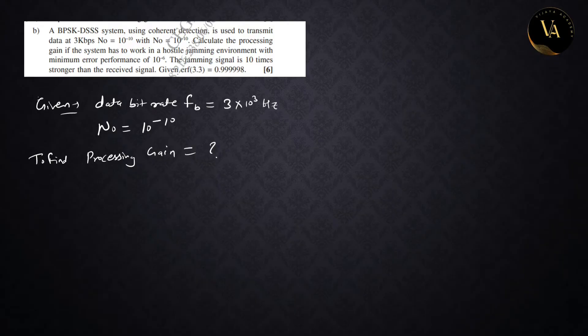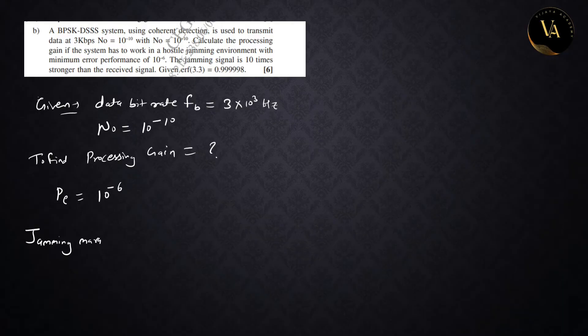What is given here? Probability of error is given as 10 times minus 6 (10^-6). Jamming signal is 10 times stronger than the received signal. We need to find the jamming margin.